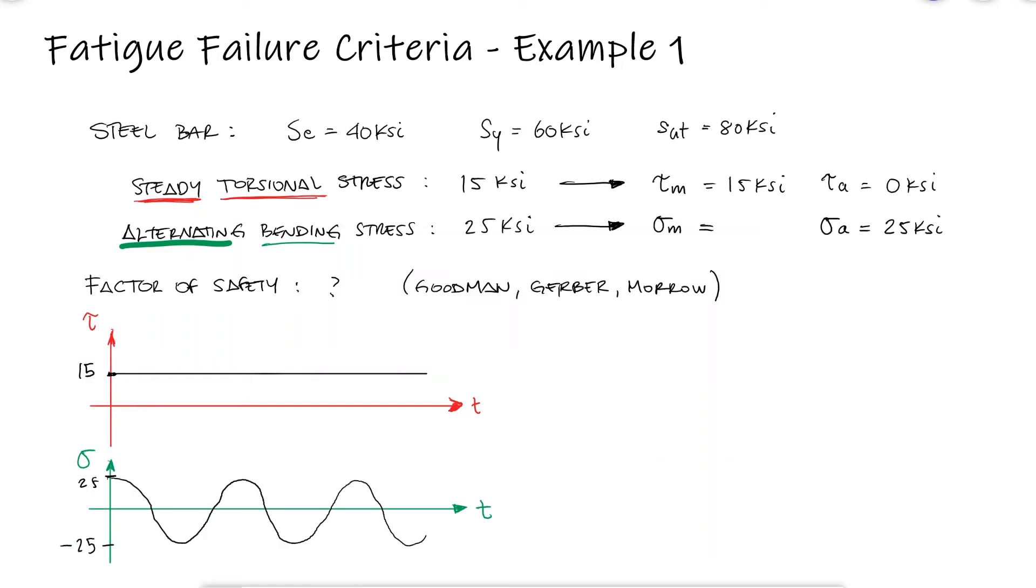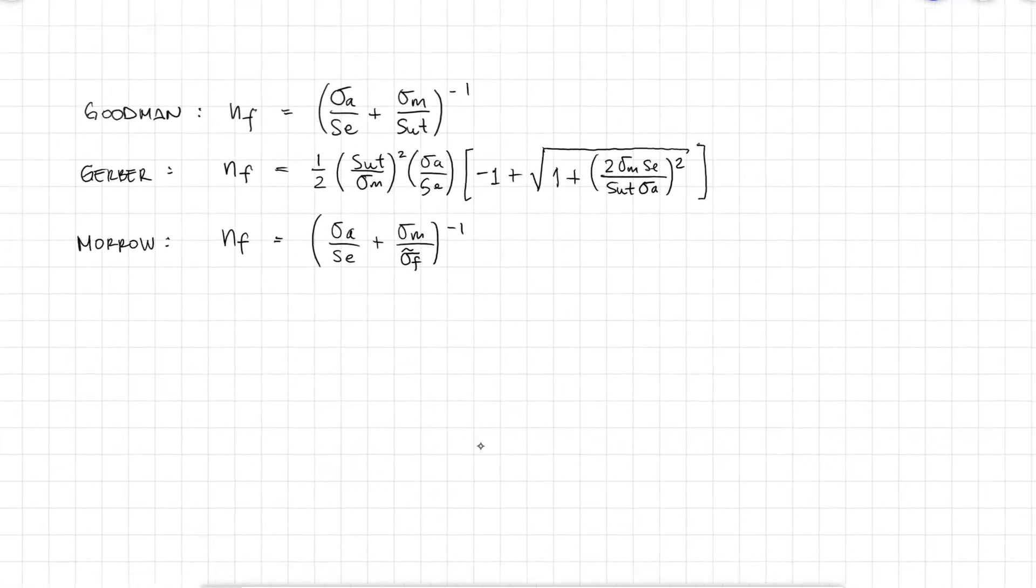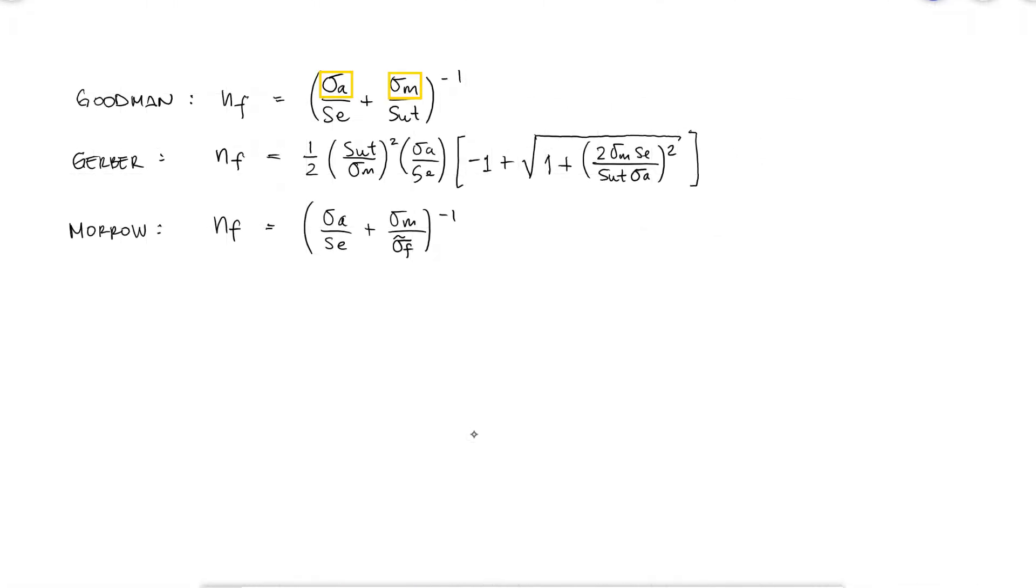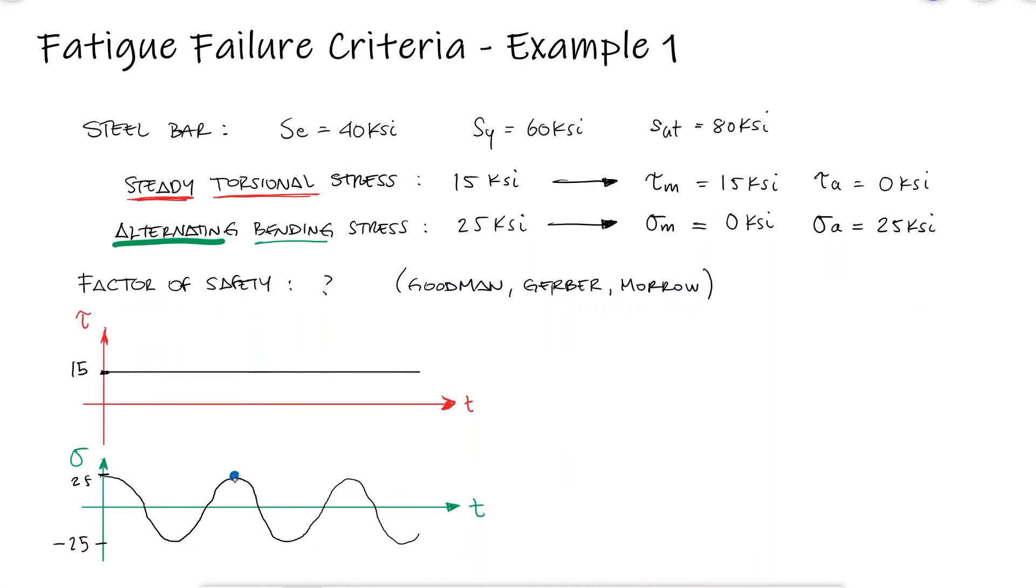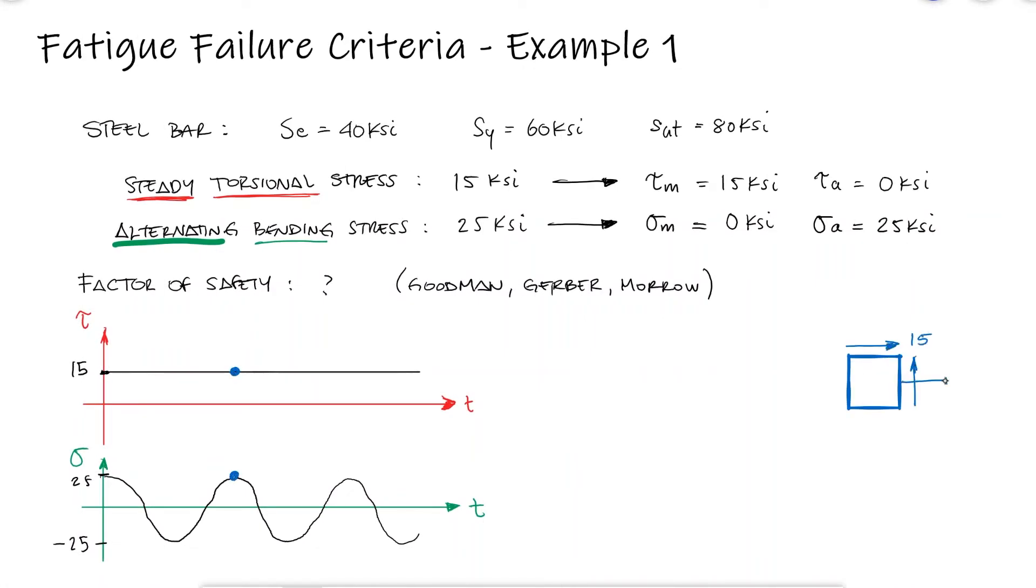This means that the mean normal stress is zero. The most common way to come up with the overall alternating and the overall mean stress that we need for our factor of safety expressions is by finding the von Mises stress for alternating and mean values. We need to do this because we have both a torsional and a bending stress that will result in some principal stresses.